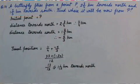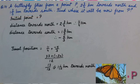A butterfly flies from a point P, 2 and 3 by 4 km towards north and 1 and 2 by 3 km towards south. Find where it will be now from P. Its initial point is P.